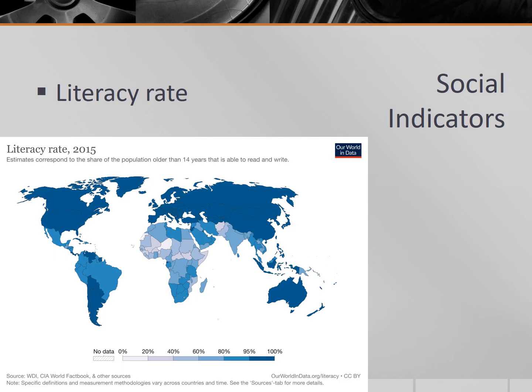Literacy rates are another social indicator that tend to increase as countries develop — they are generally above 99 percent in highly developed countries. According to UNESCO, more than 90 percent of the world's population in 2015 were literate, meaning literacy rates are not likely to differentiate between core and semi-periphery countries but will generally be lowest in periphery countries. Even with literacy rates above 90 percent globally, this still leaves more than 700 million people who are not literate, most of whom are women living in rural areas of less developed countries.